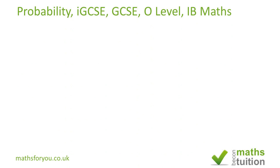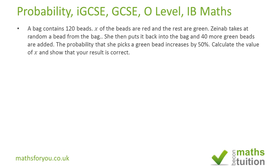Hello and welcome to this exercise on probability. We've got a bag full of bits and there are 120 bits in the bag. X of these bits are red and the rest are green. She picks a bit from the bag and puts it back, then we add 40 more green bits into the bag. The result is that the probability of picking a green bead has gone up by 50%. Calculate the value of X and show that your result is correct.